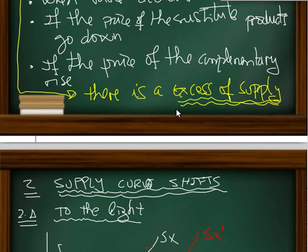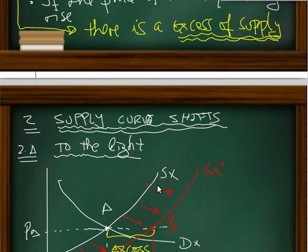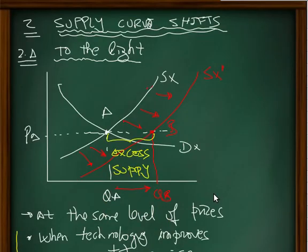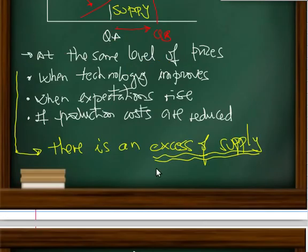On the other hand, we're going to work on supply curve shifts. First of all, when the supply goes to the right at the same level of price, it occurs because technology improves, expectations rise, or production costs decrease. In this case, there is an excess of supply.